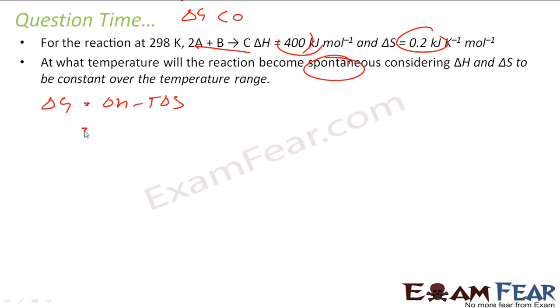Delta H is given, that is 400 kilojoule per mole, minus T something we need to find. Delta S is also given, 0.2 kilojoule per mole. And let us put this value as zero, delta G as zero, so that we can find the tipping point from where the reaction changes from spontaneous to non-spontaneous. So with this we get T as 400 by 0.2, that is 2000 Kelvin.